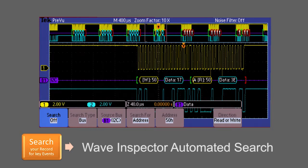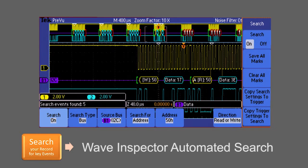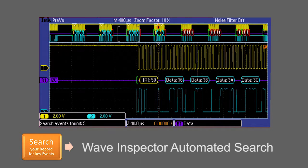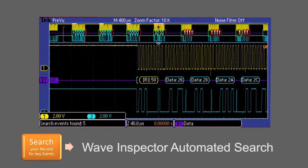The unique Wave Inspector lets you automatically search your entire waveform record for an event you specify. Wave Inspector will mark every occurrence of the event. You can even look for specific serial packet content or parallel data. No other scope in this class offers automated search.